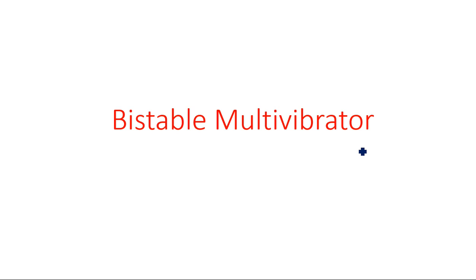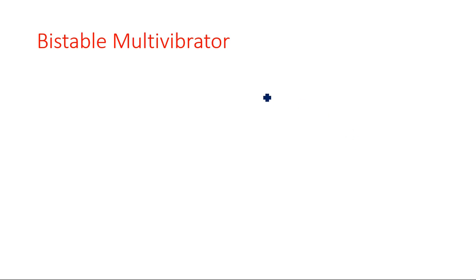In this video, you are going to learn about some parts of the bistable multivibrator. This is Part 1 of the bistable multivibrator, because there are totally different types of multivibrators — like fixed bias, self-biased, collector coupled, and emitter coupled. I will explain them in detail one by one.